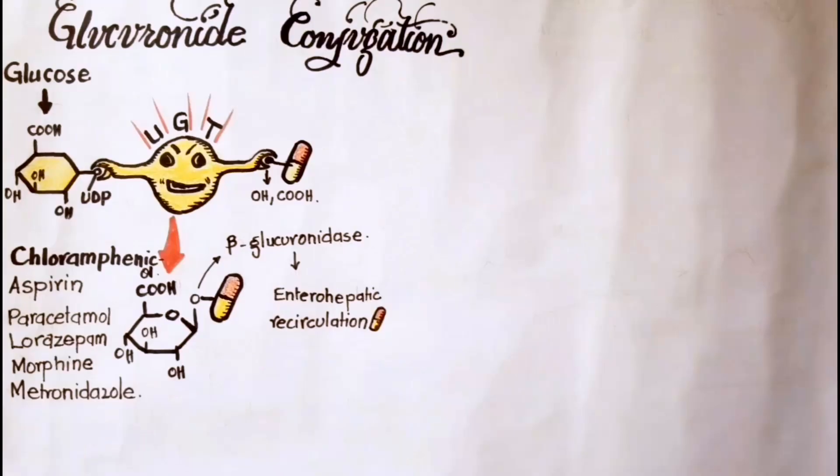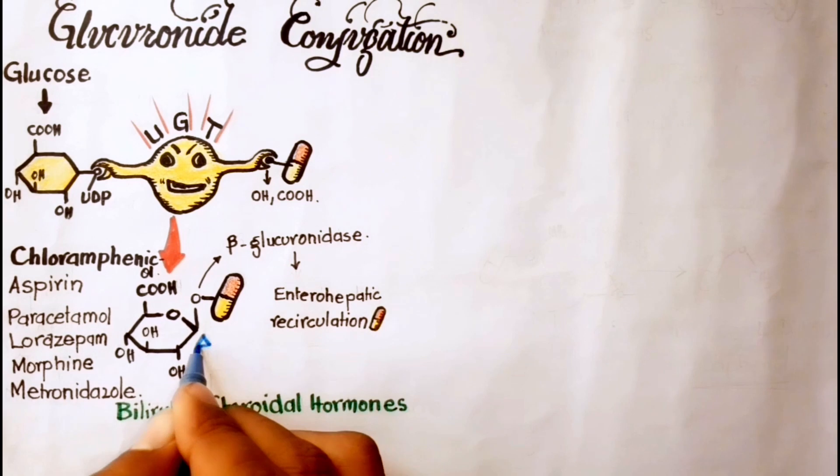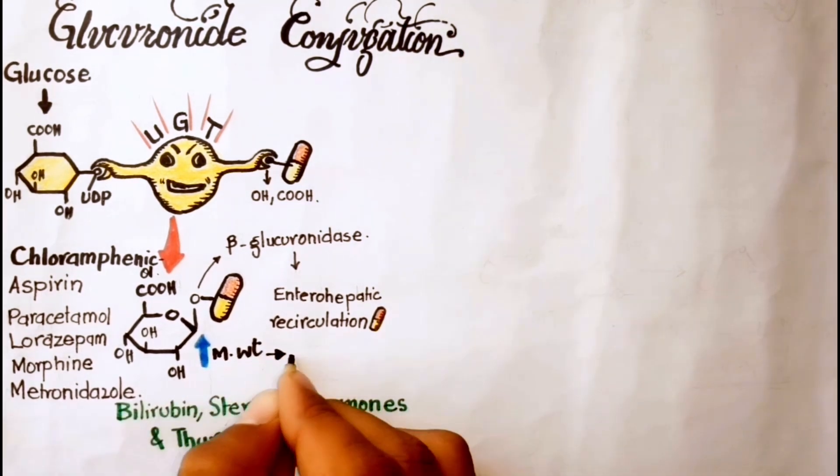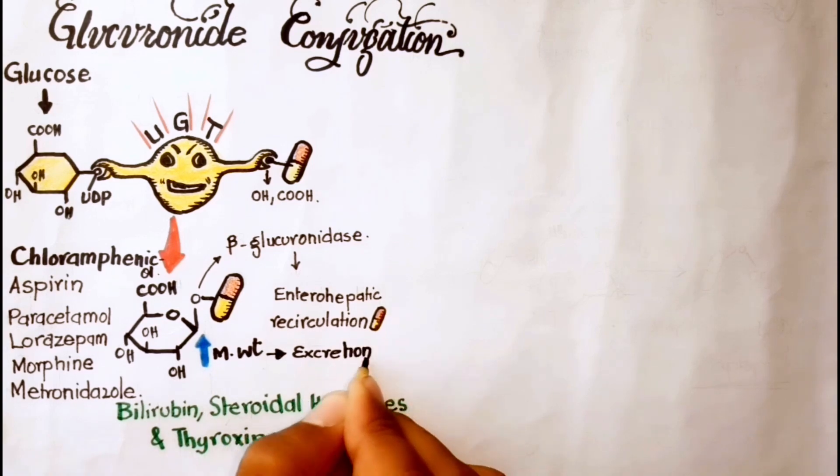Not only drugs but endogenous substrates like bilirubin, steroidal hormones, and thyroxine utilize this pathway. Glucuronidation increases the molecular weight of the drug which favors its excretion.